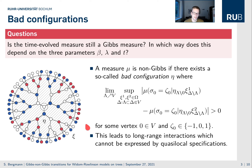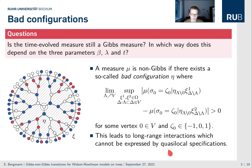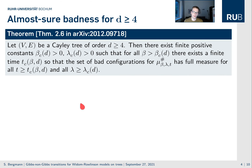Gibbs measures have the property of being consistent with a specification, and these specifications don't exhibit this behavior. They are what's called quasi-local, which is in some sense short-range. These bad configurations contradict this quasi-locality property, so we need to find them.